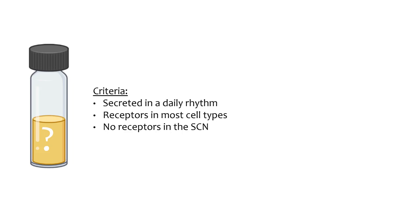An ideal candidate for one-way communication from SCN to periphery would not have receptors in the SCN. One class of hormones, called glucocorticoids, is present in serum and meets these criteria. Therefore, it was hypothesized that glucocorticoids synchronize peripheral oscillators within the body.